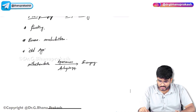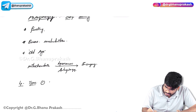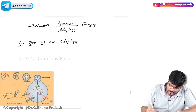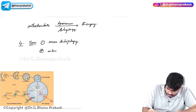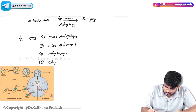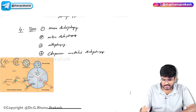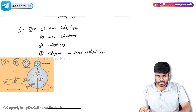How many types of autophagy are there? There are mainly four types of autophagy. The four types include: macro autophagy, micro autophagy, mitophagy, and the fourth one which is chaperone-mediated autophagy. Let's see what the differences are between micro autophagy, macro autophagy, mitophagy, and chaperone-mediated autophagy.